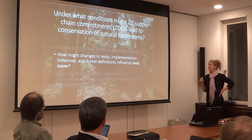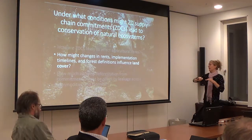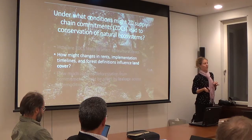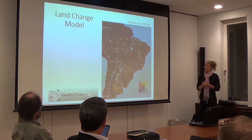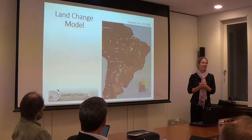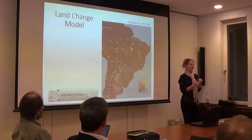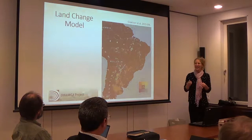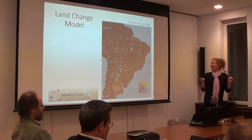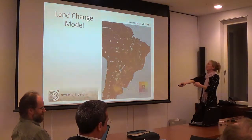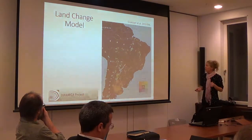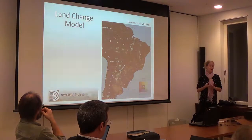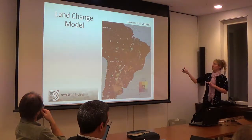We then want to model how changes in rents, along with zero deforestation commitments themselves in terms of implementation timelines and forest definitions, influence land cover. We're creating a land use change model in Dynamica Ego — and I'll note the creator of Dynamica and the creator of GTAP are both in the room, so serious imposter syndrome. We're using annual MODIS-derived pasture, cropland, and several other land cover data from Jordan Graser at Boston University as input to the spatial model.